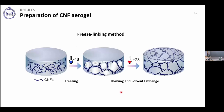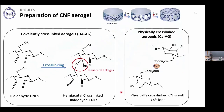In Part 1, aerogels were prepared by freeze-linking. A CNF gel was frozen in a freezer at −18°C; during freezing, the growth of ice crystals pushes the CNFs together. By choosing the correct chemistry we can cross-link these CNFs, so when the ice crystals melt the cellulose structure doesn't collapse. Then by solvent exchange to ethanol or acetone, we decrease capillary forces and dry the aerogels at ambient conditions. Two types were prepared: physically cross-linked aerogels using calcium ions, and covalently cross-linked aerogels using dialdehyde CNFs, where aldehyde groups formed hemiacetal linkages.